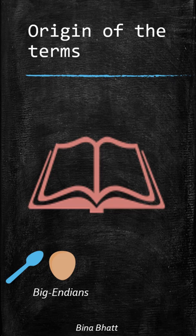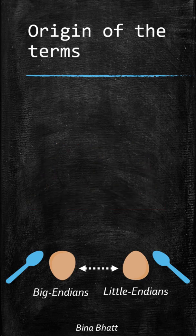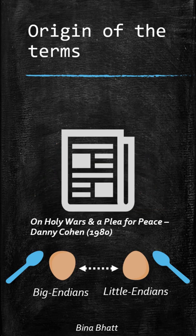And thus, obviously, they were known as Little Endians — a completely meaningless squabble. But from there, these words found their way into an article titled "On Holy Wars and a Plea for Peace," which was written by computer scientist Danny Cohen in 1980. And that's how these terms were introduced in the world of computer architecture.